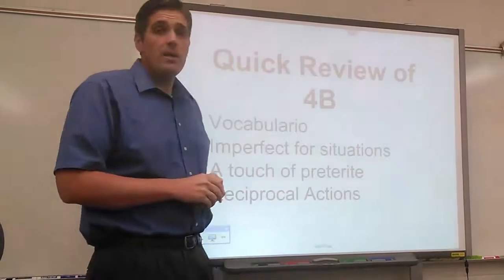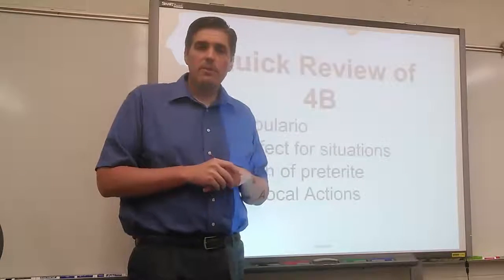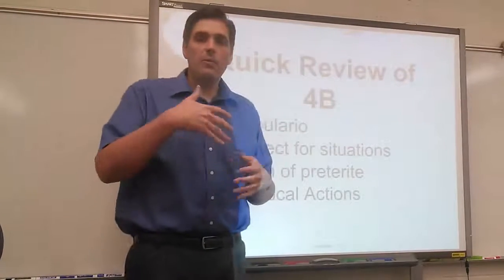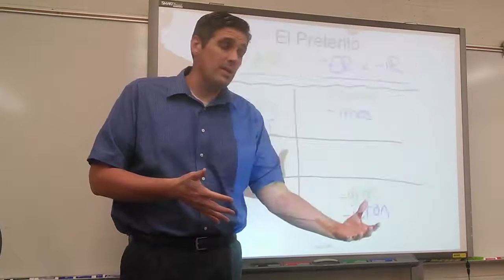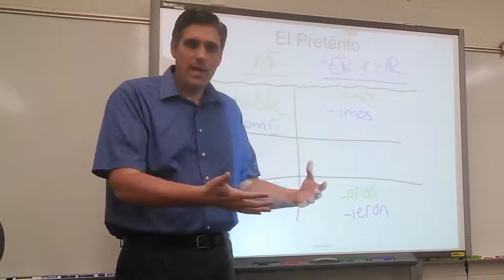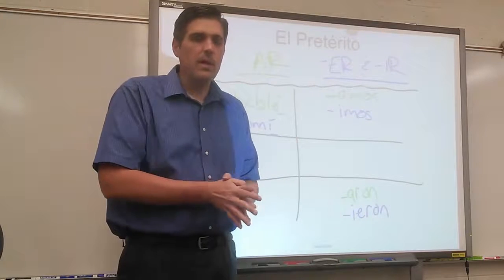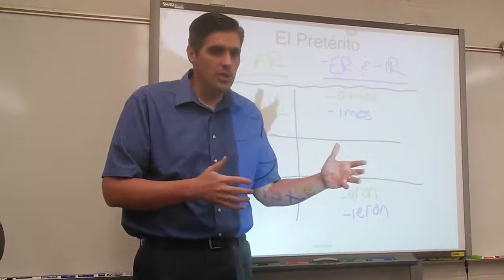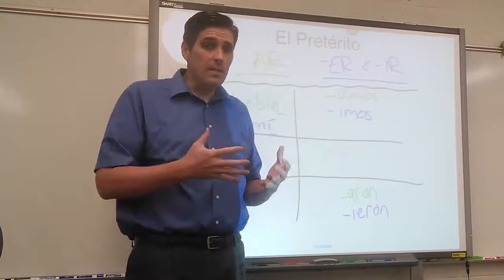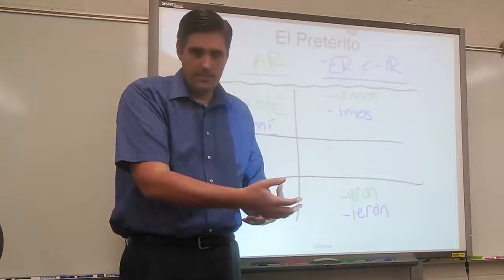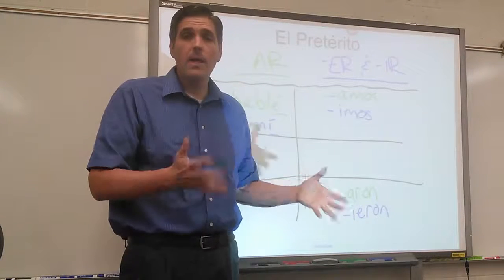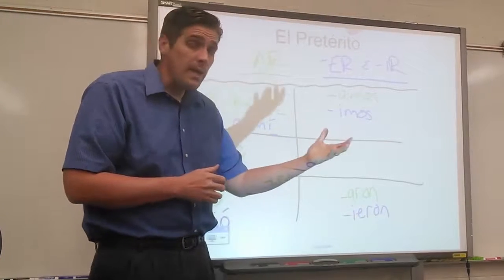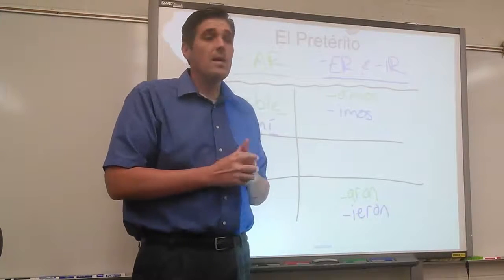The next thing we talked about in this chapter — and this was the doozy — the imperfect. We used the imperfect before to talk about what things were like when you were little, how things used to be. But in this chapter, we talked about the imperfect for situations, setting the scenery. It was a dark, rainy day — that's the imperfect, because it's something that was going on, not something that just happened in the past. The house was big, the house was little, they were happy — things like that.